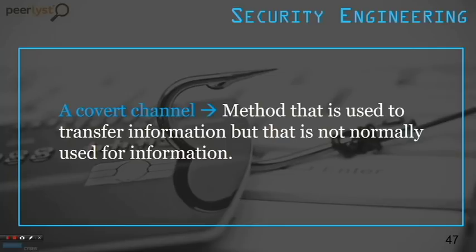The covert channel is a method used to transfer information through a path not normally used for information transfer. An example is steganography — using a technique like a dead drop where you post a picture online, but data is hidden within the picture itself. There was a story about a company that had information leaked through pictures posted on social media — a clear example of a covert channel.